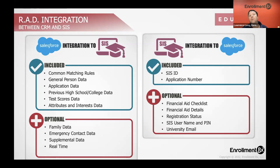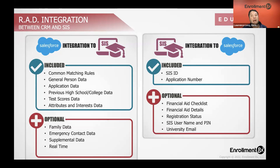On the right-hand side, we're bringing data back. We're going to bring back the SIS ID and the application number into the CRM system. Optionally, some clients may also choose to bring back financial aid information, registration status, and perhaps the university email. So that's what that integration might look like between CRM and SIS on the recruitment and admissions side of the house.